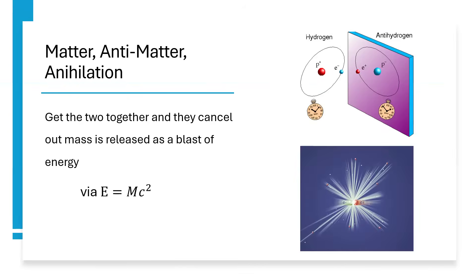Antimatter is also famous, of course, for being able to annihilate with ordinary matter. You get matter and antimatter together and they will cancel each other out, releasing their entire mass energy in a burst of gamma radiation via the equation E equals MC squared — all the mass of both particles converted into pure energy. So if you had some antimatter, it would be a tremendous source of power, a great fuel for a starship perhaps, and also a terrific way of making a very dangerous bomb.